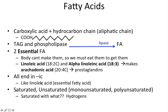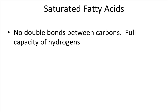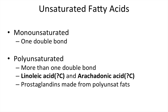Fatty acids can be categorized as saturated or unsaturated. Within unsaturated, they can be monounsaturated or polyunsaturated. Saturated means saturated with hydrogens — there are no double bonds between the carbons, so each carbon has a full complement of hydrogens. Monounsaturated has just one double bond, and polyunsaturated has more than one double bond. The two main ones to focus on are linoleic acid and arachidonic acid. Prostaglandins are made from polyunsaturated fats, specifically using arachidonic acid as a precursor.